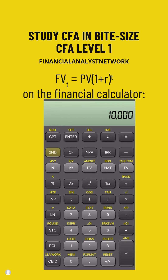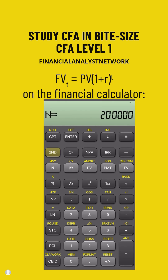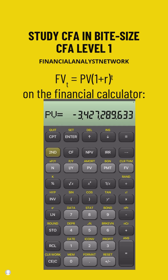Note that the PV or the FV can be negative — one will always be negative and the other positive, but it doesn't matter which one. Calculating the future value from the present value or vice versa is the most fundamental CFA Level 1 formula and concept. Questions will get harder and more complex over time, but they use the same basic foundation. Like this video if you want more CFA lessons.